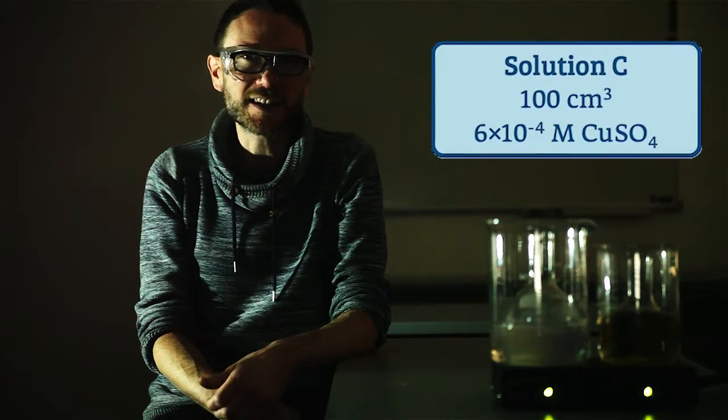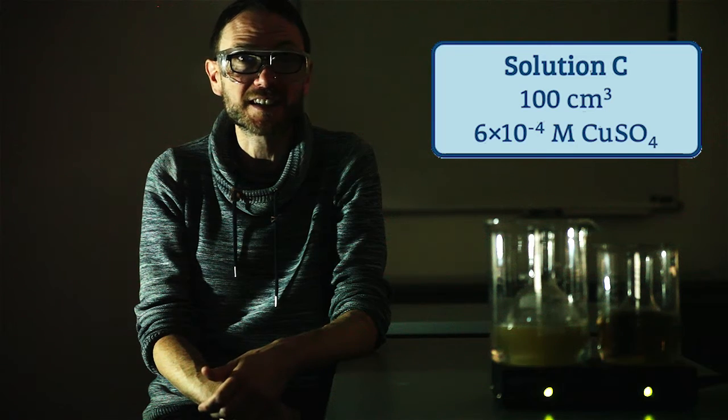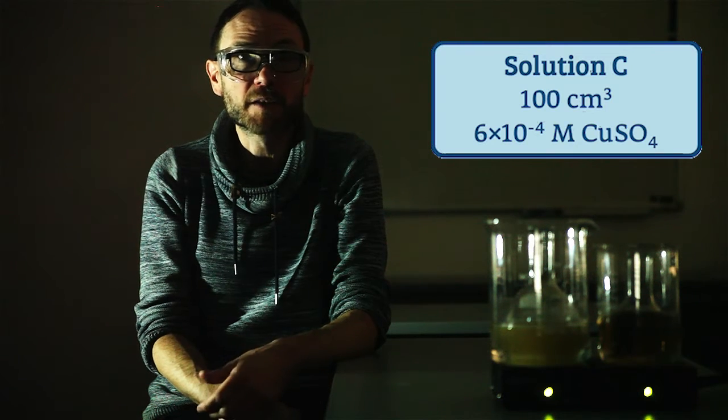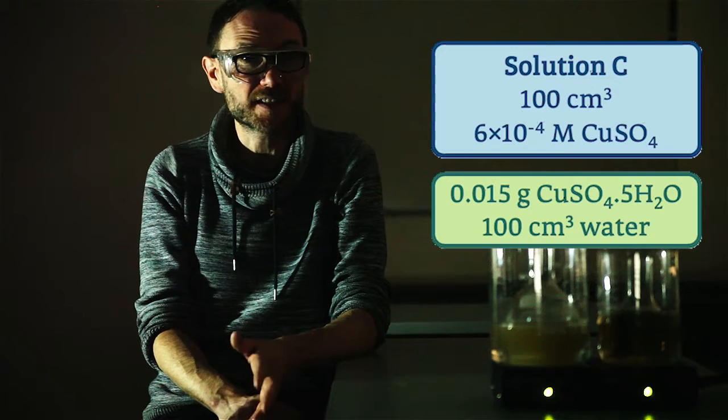Solution C is an implausibly dilute solution of copper 2 sulfate, approximately 6×10⁻⁴ molar, made up by dissolving 0.015 grams in 100 cm³ of water.